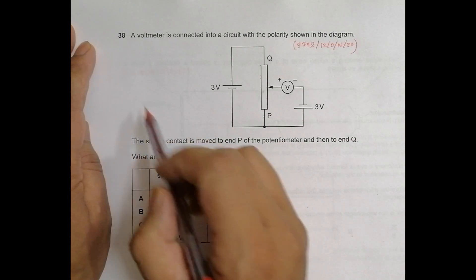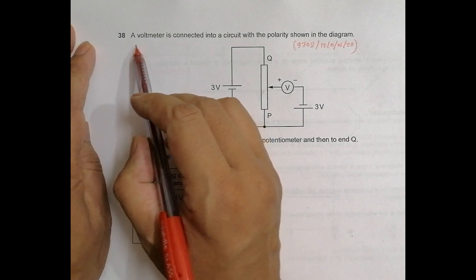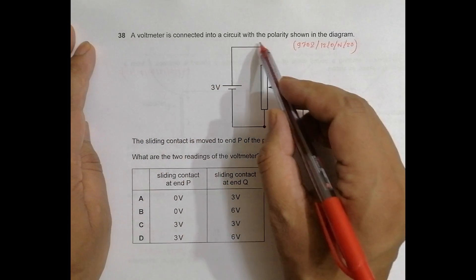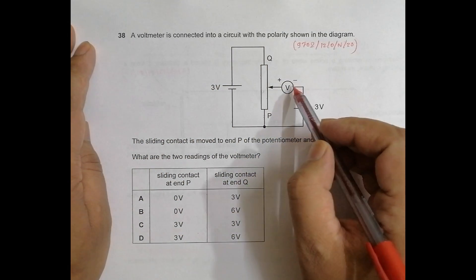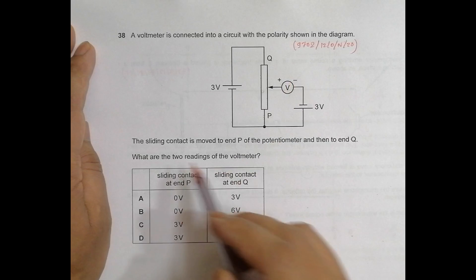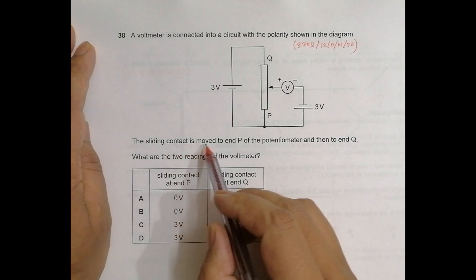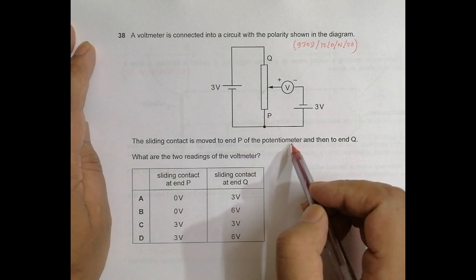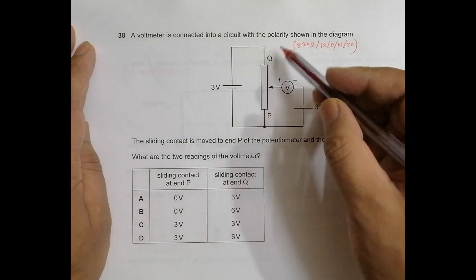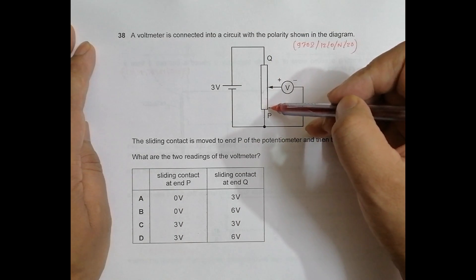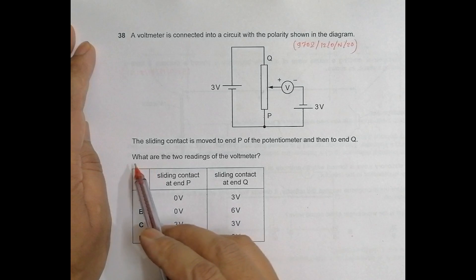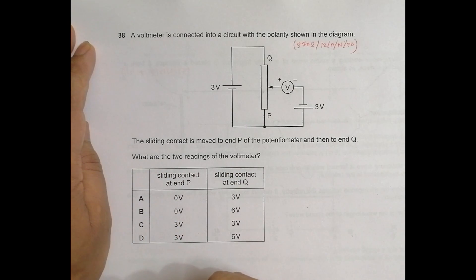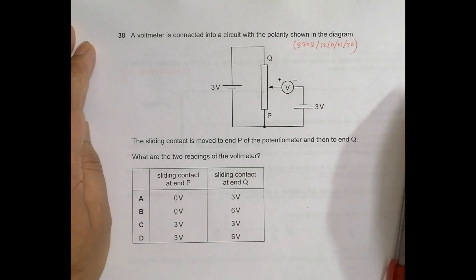It is about current electricity. It says a voltmeter is connected into a circuit with the polarity shown in the diagram. A sliding contact is moved to position P of the potentiometer and then to position Q. What are the two readings of the voltmeter?